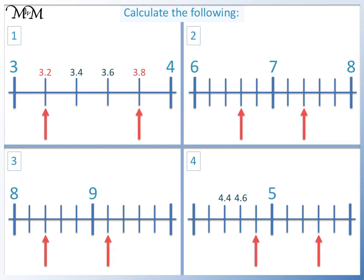Question 2. From 6 to 7, there are 5 steps. And from 7 to 8, there are 5 steps. So we're counting in 0.2s. Starting from 6, we have 6.2, 6.4, and 6.6. Counting from 7, we have 7.2, and 7.4.